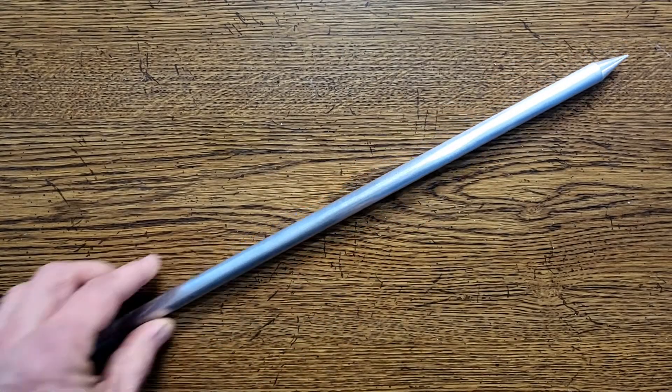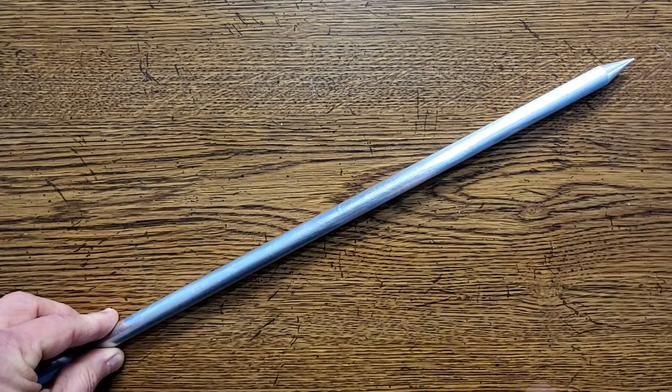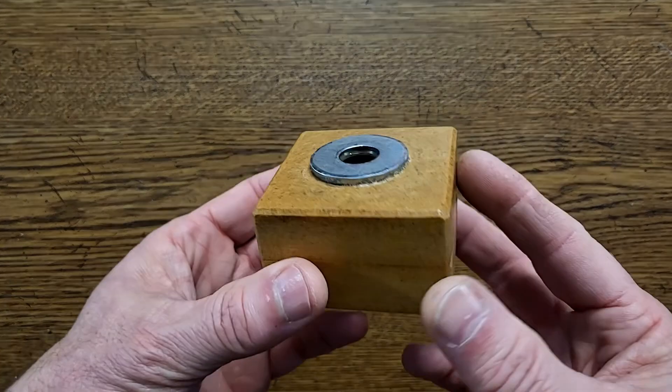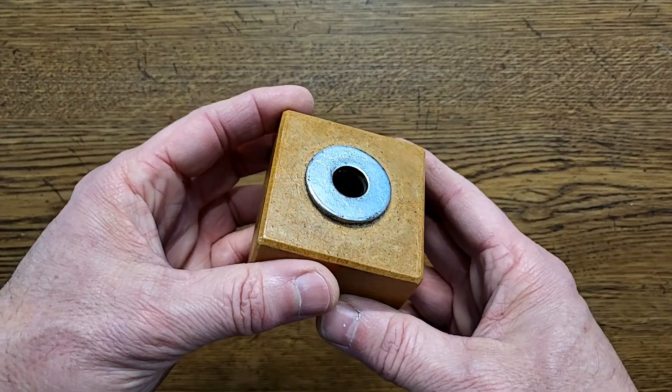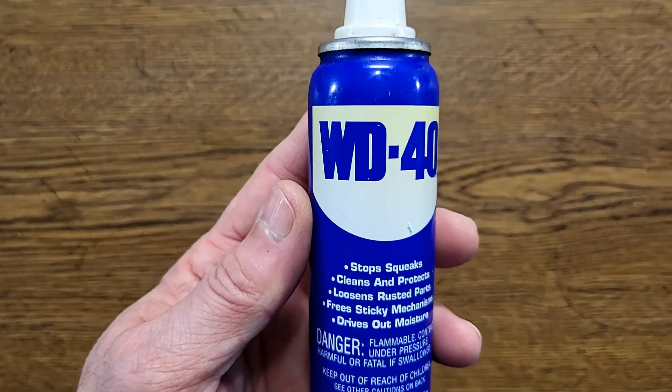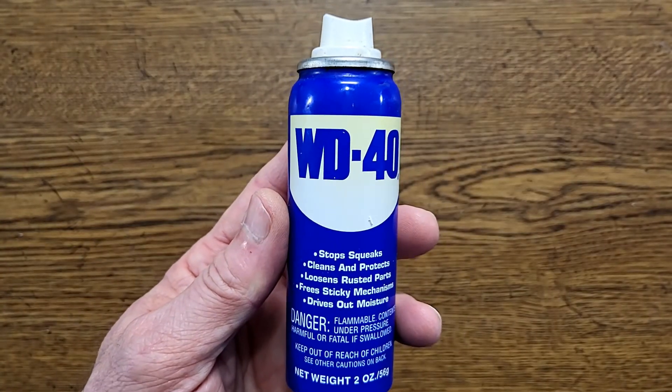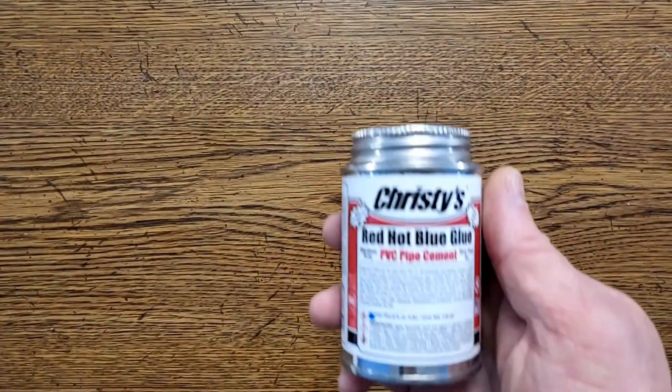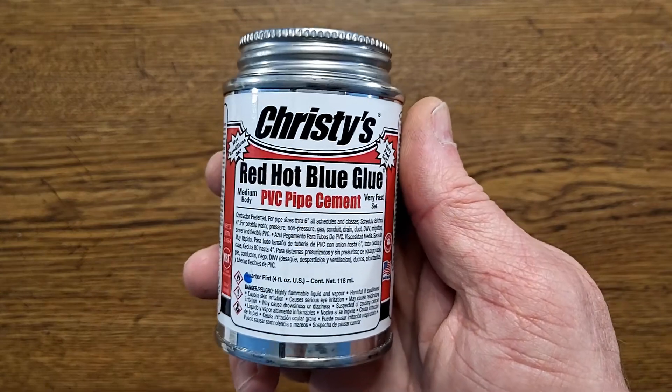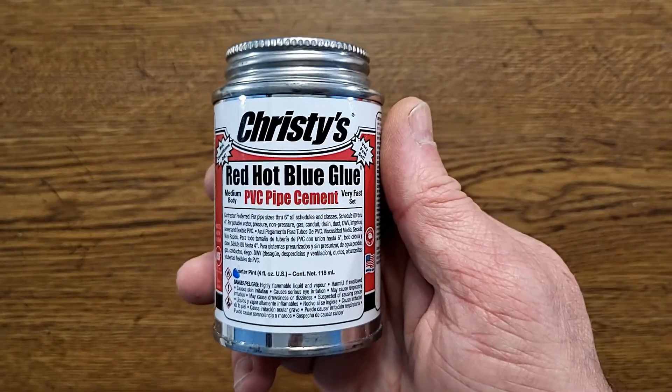A half inch coring rod, pointed at one end. A core rod centering tool. We'll talk more about the core rod and the centering tool in just a little bit. WD-40 or similar spray oil. PVC primer and PVC cement. Or, you can use this style that I'm going to be using. It's a cement that doesn't require primer.